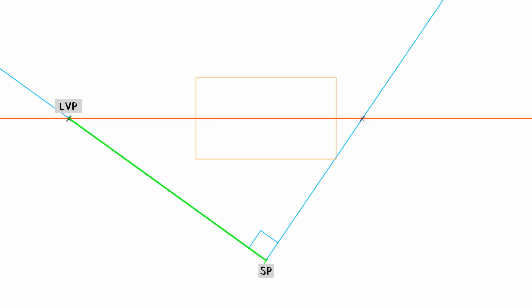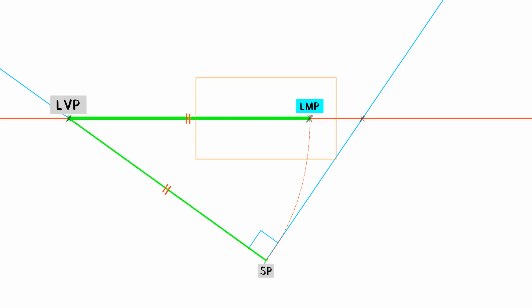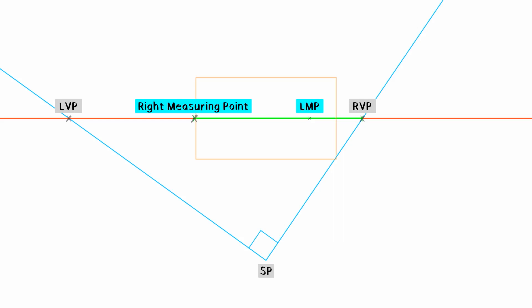There's another method that has some extra powers: using measuring points. Mark the length between the left vanishing point and the station point, then rotate that length from the LVP up to the horizon line. That's where we put the left measuring point, or LMP. So the distance between the left vanishing point and the station point equals the distance between the left vanishing point and the left measuring point. Do the same for the right side: mark the length between the right vanishing point and the station point, rotate it up to the horizon line — that marks the right measuring point, or RMP.